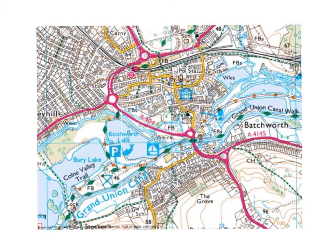So let's see what you've learned. Here is a town map of Rickmansworth. Can you identify the recreational land use? You should be identifying the boat clubhouse here, picnic sites, fishing facilities, museum, and footpaths here.